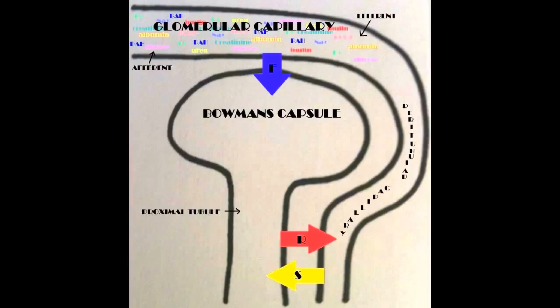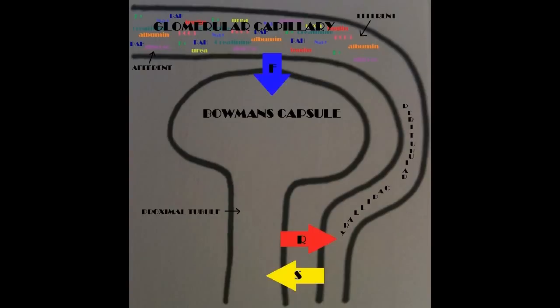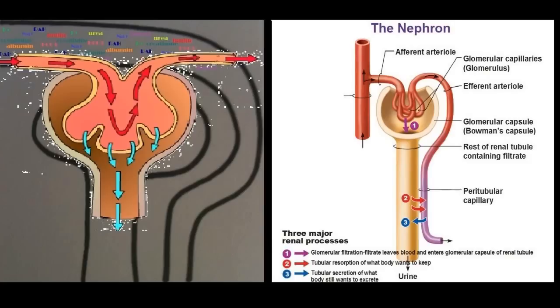Then in the tubule, substances can either be reabsorbed, indicated by the red arrow, which then go back into the circulation, or secreted into the tubule, indicated by the yellow arrow, via the peritubular capillaries, which then are eliminated from the body. Here I've overlapped my simplified drawing with the more elaborate one so you can get a better idea of the structures and how they're positioned.